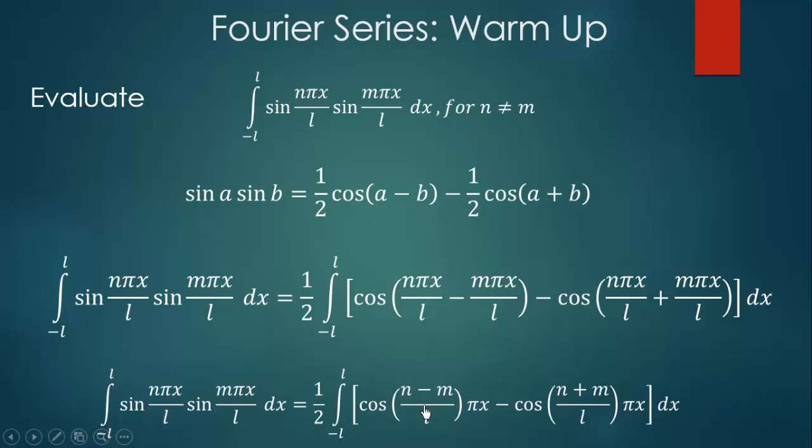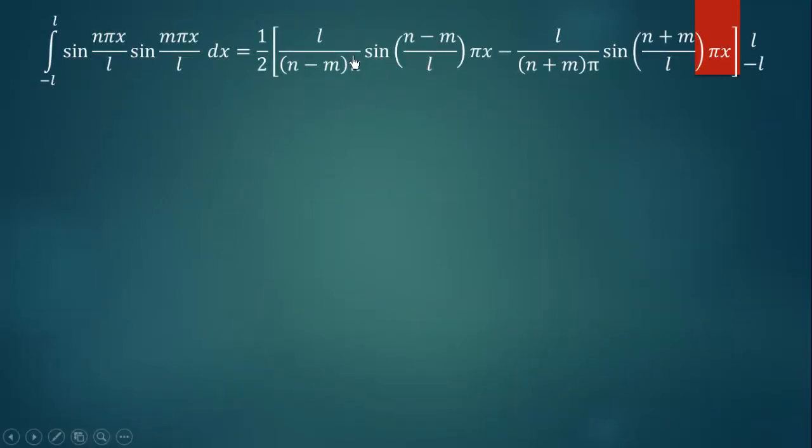Now we can easily take the integral of this by doing it term by term. So taking the integral, we get 1 over n minus m pi, then sine n minus m over l pi x. Then we have minus l over n plus m pi, then sine n plus m over l pi x from negative l to l.